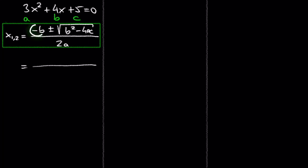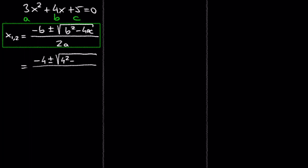So we have negative b, which is negative 4, plus or minus the square root of b squared — which is 4 squared — minus 4 times a, which is 3, times c, which is 5. At the bottom of the fraction we have 2 times a, which is 2 times 3.